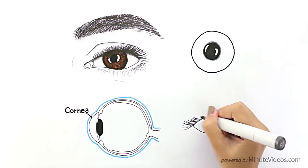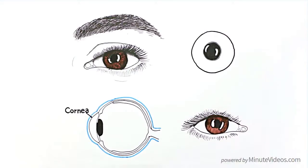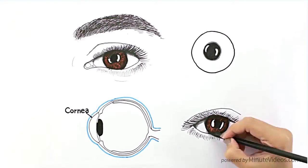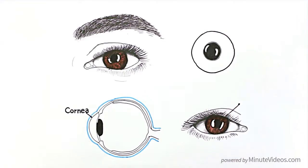Of course, the cornea must be transparent so that light from outside can come in through the black spot in the middle of the eye, which we call the pupil.